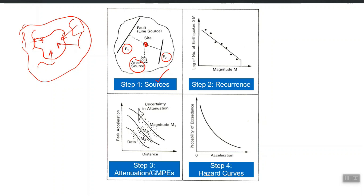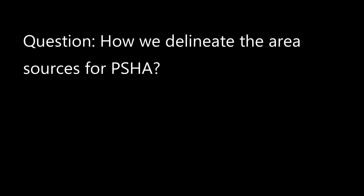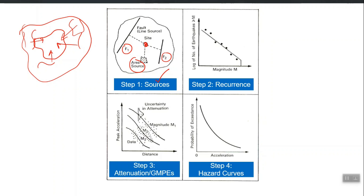When we did the PSHA of whole Pakistan, we considered a 200 or 300 kilometer buffer zone outside the administrative boundary. Any seismic source even outside the administrative boundary that can affect the hazard value inside the country is considered. We consider the whole region including the buffer zone outside the boundary. Delineation or marking of area sources is one major challenge and a major step in PSHA.